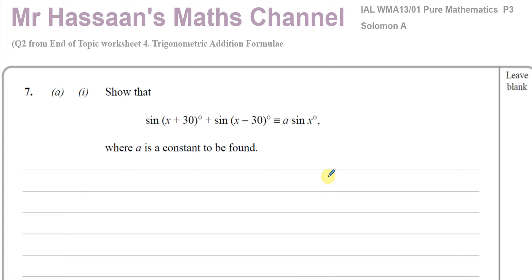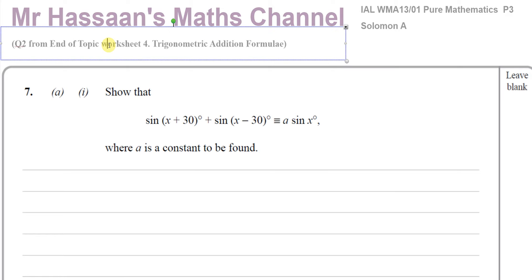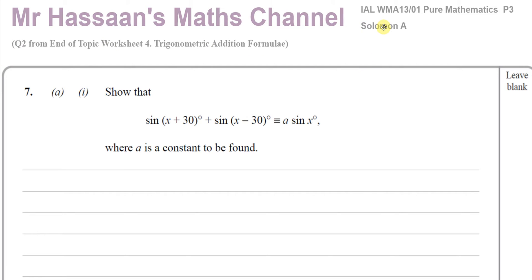Welcome back, this is Mr Hassan's Math Channel and I'm now answering a question from one of my endotopic worksheets, which is about the addition formulae. It's from worksheet number four, called 'Trig Addition Formulae', from P3, question number two. It's taken from the Solomon A collection for the old C3 papers. The question tells us: show that sin(x+30) + sin(x-30) is equal to a times sin x, where a is a constant to be found.